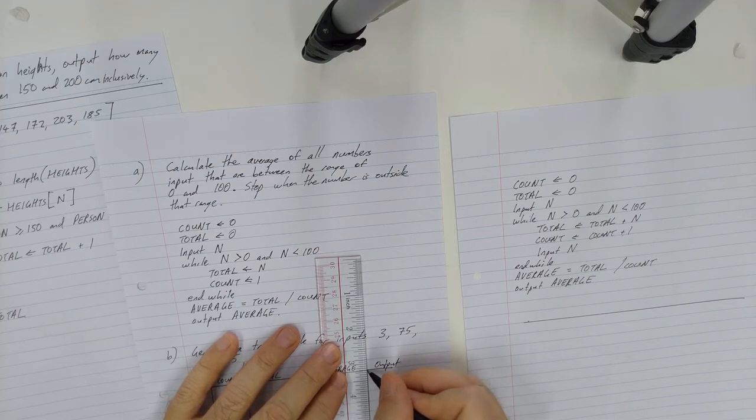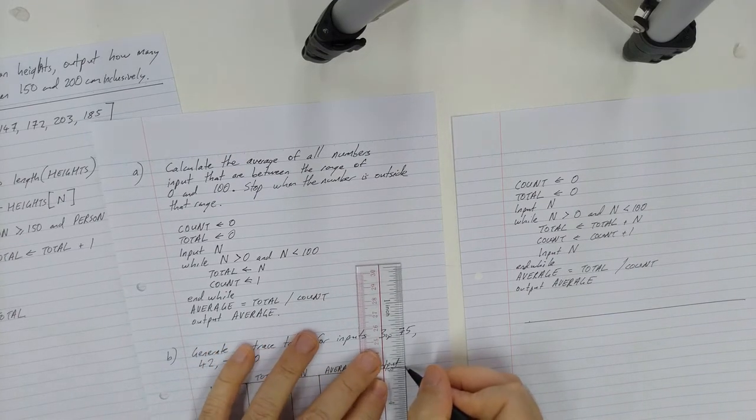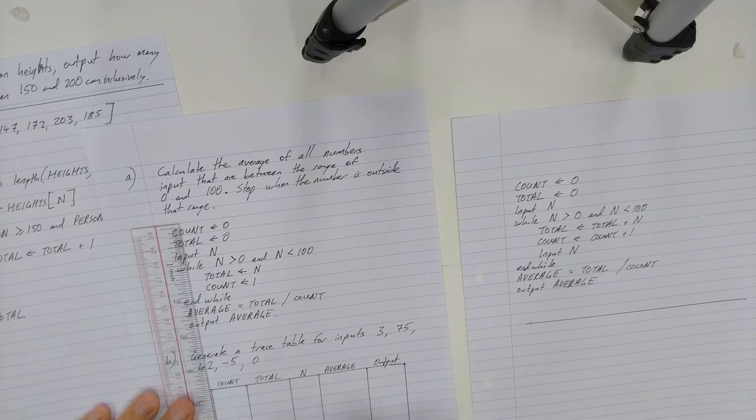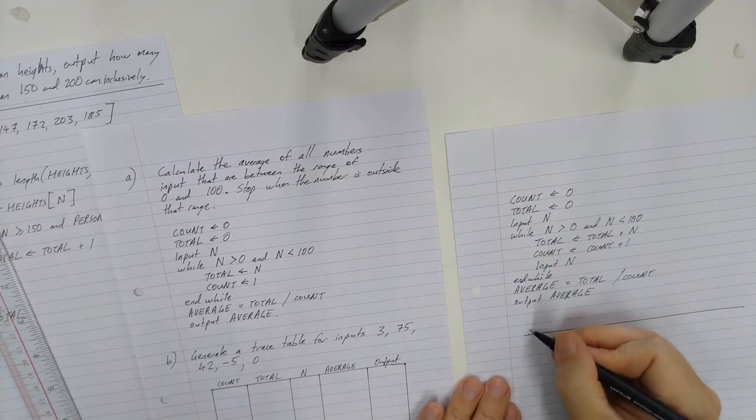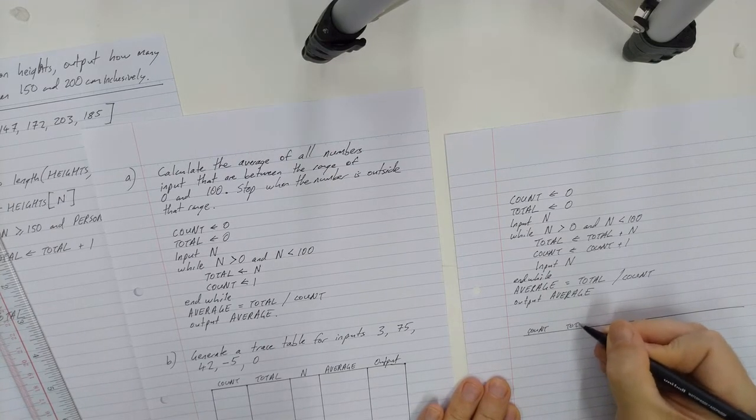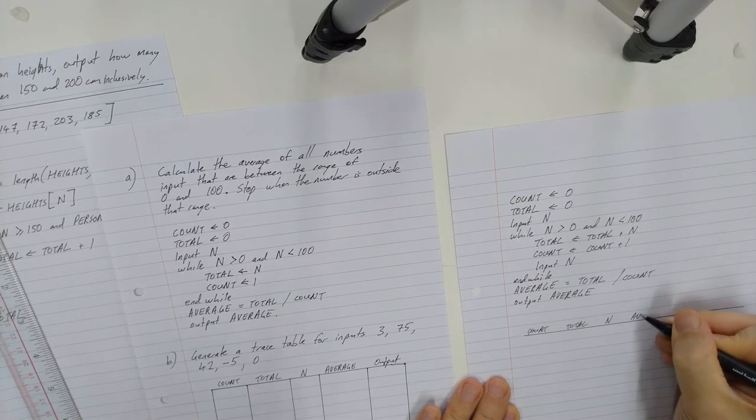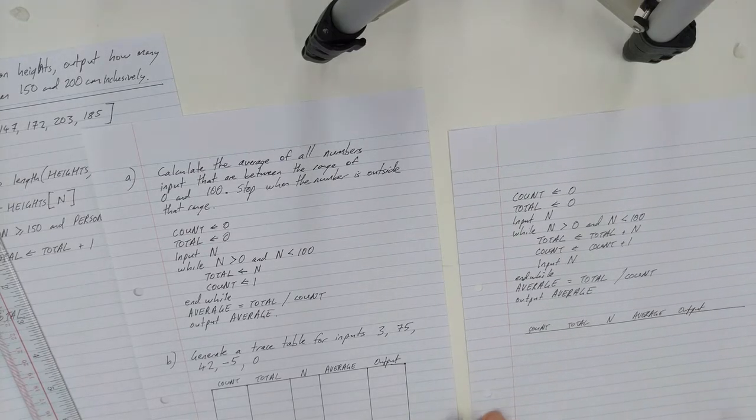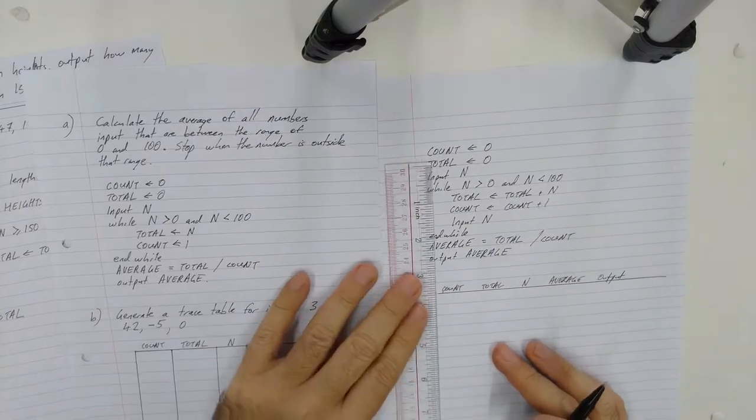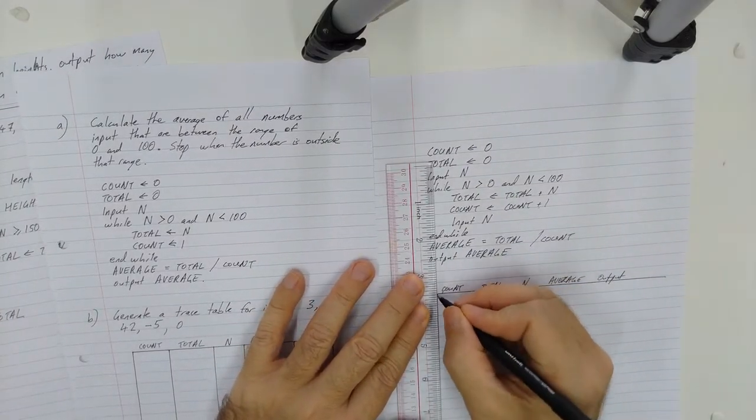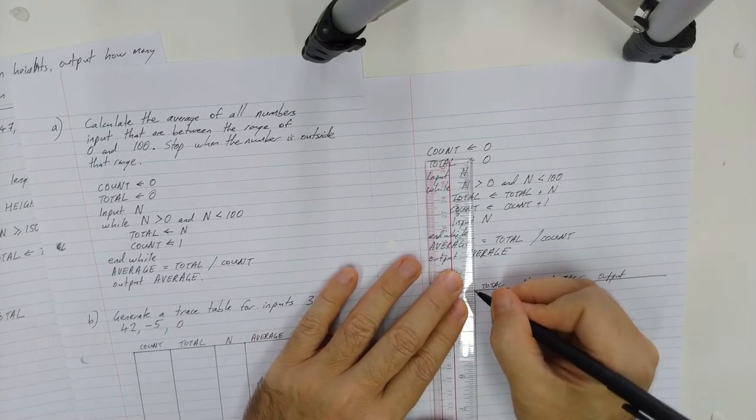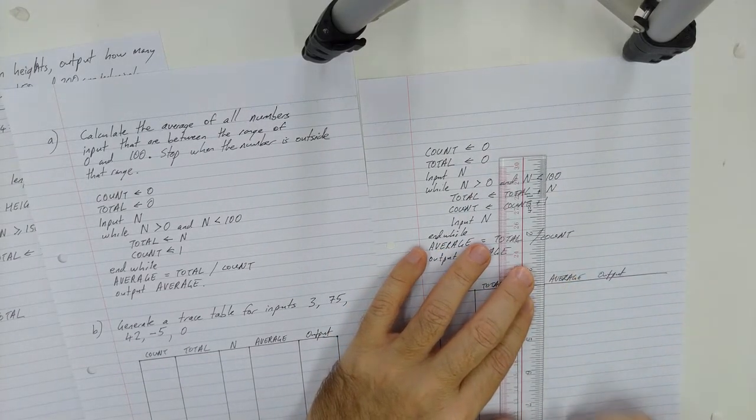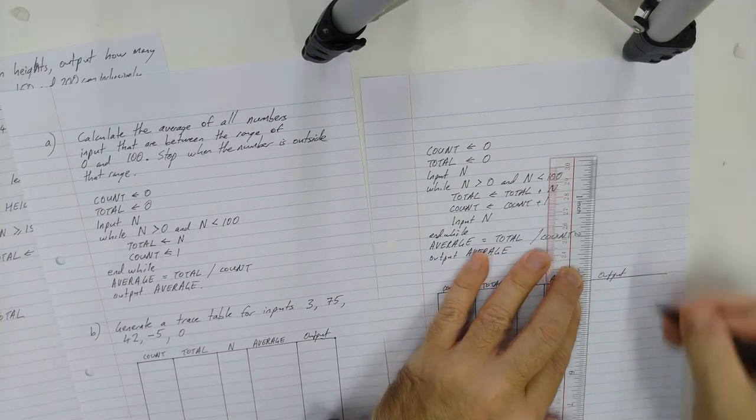I don't think I've actually seen them ask for input, so you know, but hey, no one ever accused the IB or the IGCSE of being consistent. I will just quickly rule up the same here. Count, total, n, average and output. There's my little blue tag telling me where the edge of the screen is. Alright, so how do we use a trace table?